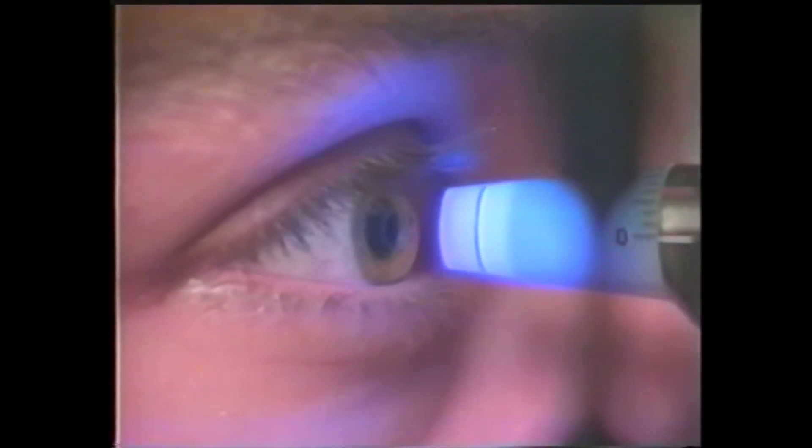If the patient is not intimidated by the advancing tonometer tip, you can eliminate holding their upper eyelid. Adjust the tonometer prism and cornea contact with the joystick so that the mires are symmetric.